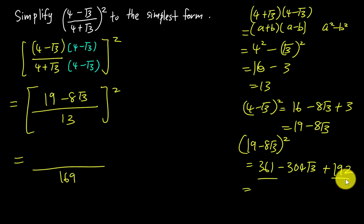Both integers we can add together: 361 + 192 = 553. So we get 553 - 304√3 over 169. This should be the final answer.